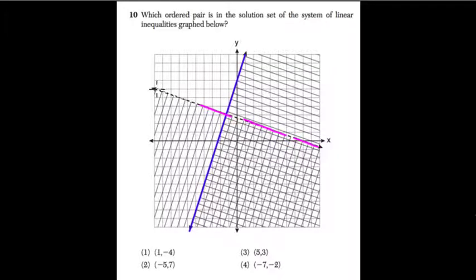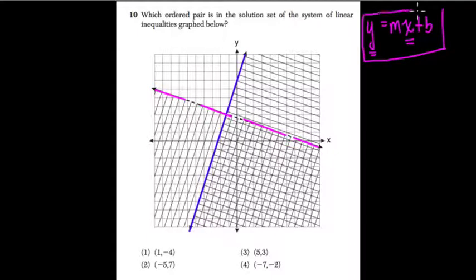These are two inequalities, and you might be used to the equations of lines written as y equals mx plus b. That means you have a line where all the points on the line have x values and y values that are equal to each other in terms of this equation.